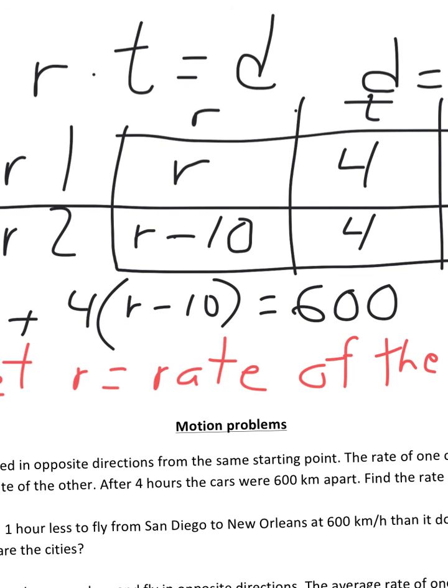I forgot one more thing that I should have done in here. I needed to define my variable. So make sure that you have, you let R, you explain what R is going to equal in this case. And this is not so obvious as the age problems. So we do need to define it in here. Let R equal the rate of the faster car.